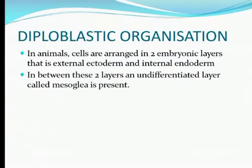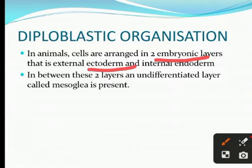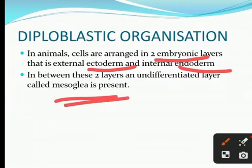In diploblastic organization, animal cells are arranged in two embryonic layers. Those two layers are the external ectoderm and the internal endoderm. In between these two layers, an undifferentiated layer called mesoglia is present.